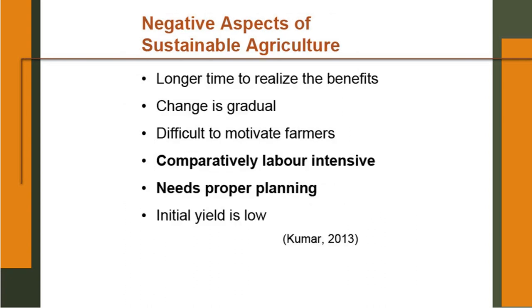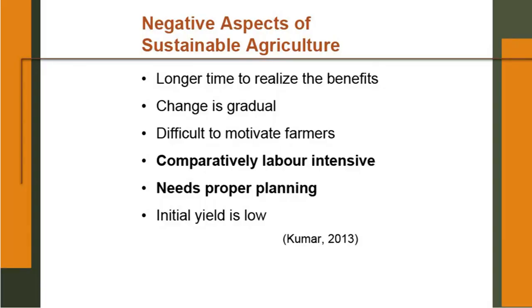Negative aspects of sustainable agriculture: it is not that sustainable agriculture is always good and everything is fine with it — it may also have certain limitations. One is that it takes a longer time to realize the benefits; change is very gradual. It is difficult to motivate farmers to adopt sustainable agricultural practices, because you need to follow good agricultural practices or best management practices which farmers are hesitant to follow. It is comparatively labor-intensive, needs proper planning, and initial yield is low. You have to bear with it — initial yield is low because you are not using large quantities of chemicals, fertilizers and pesticides. Only moderate use of such chemicals is prescribed.